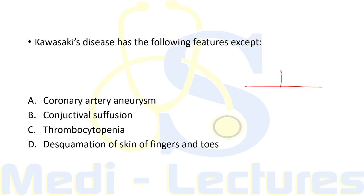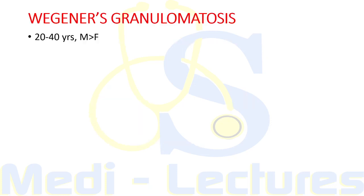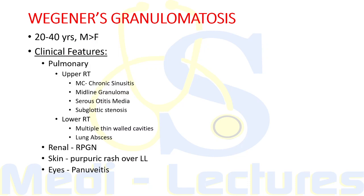To summarize so far: we have covered large vessel vasculitis (Giant Cell Arteritis and Takayasu Arteritis), medium vessel vasculitis (PAN and Kawasaki Disease), and Microscopic Polyangiitis in small vessel vasculitis. Now we move to ANCA-positive vasculitis. First, C-ANCA positive: Wegener's Granulomatosis, also known as Granulomatosis with Polyangiitis (GPA), typically seen in 20 to 40 years, more common in males.